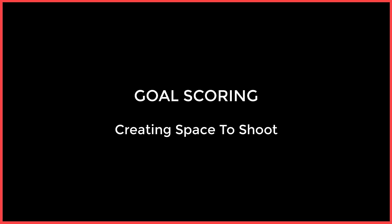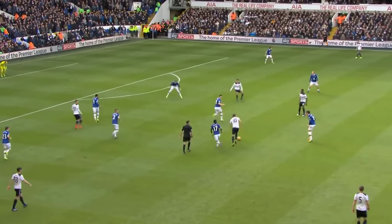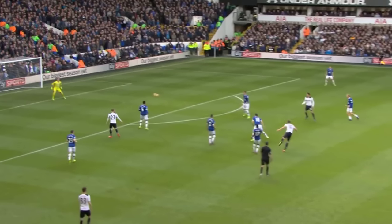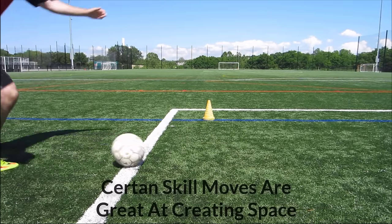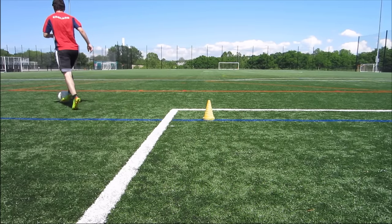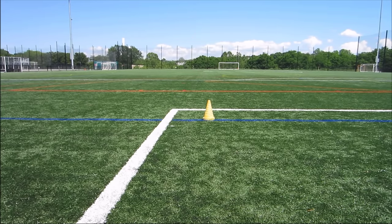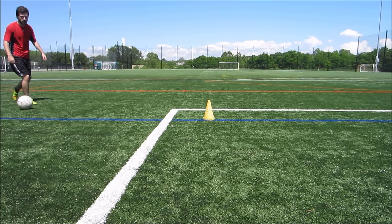Another important thing a striker needs to be able to do is create the space they need to shoot. Usually you only need to create a yard of space, and this can be done with intelligent runs and movement, but there are other ways too. This can be done by simply quickly putting the ball to the side and getting your shot off, taking a few more touches, or using a complete skill move. You can also use combination play with teammates. I'll link a video in the description going over some ways to practice creating space to shoot.